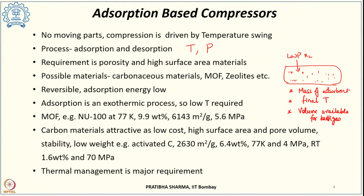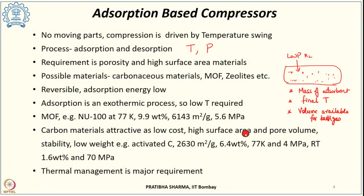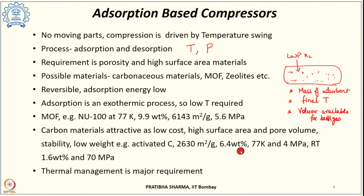Carbon based materials are very attractive because they have moderate cost, very high surface area, high pore volume, stability, and lower weight. For example, with activated carbon having a specific surface area of 2630 meter square per gram at 77 K and 4 MPa, a gravimetric capacity of 6.4 weight percent could be obtained.